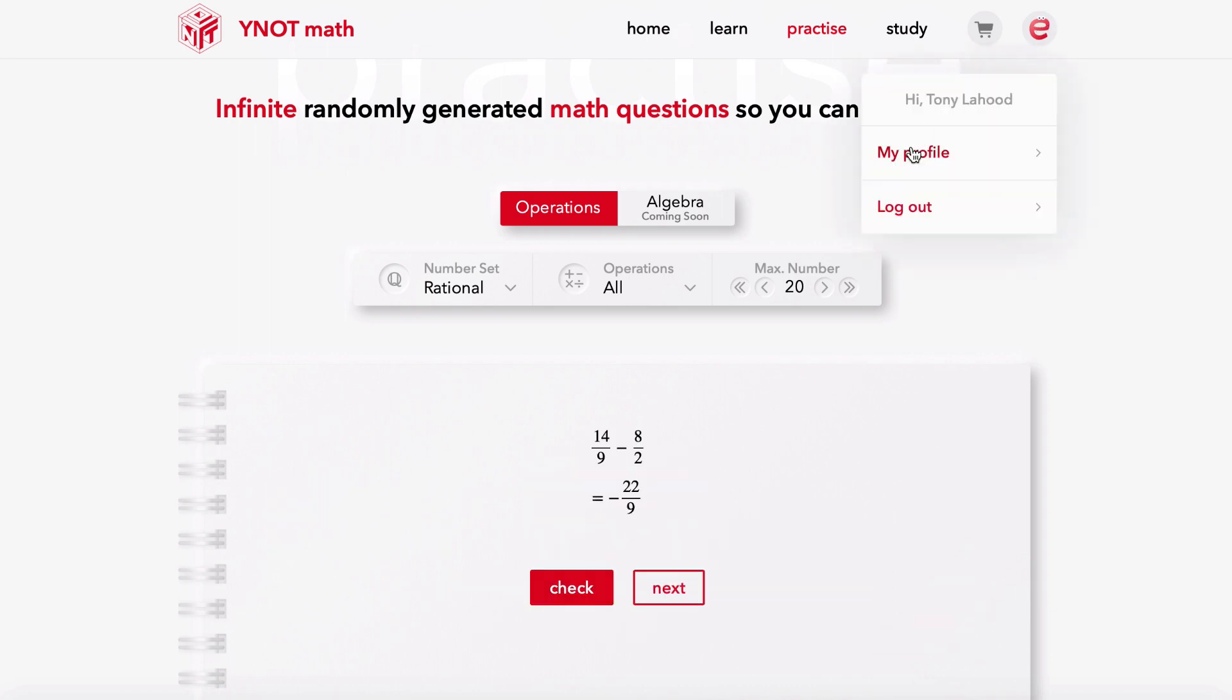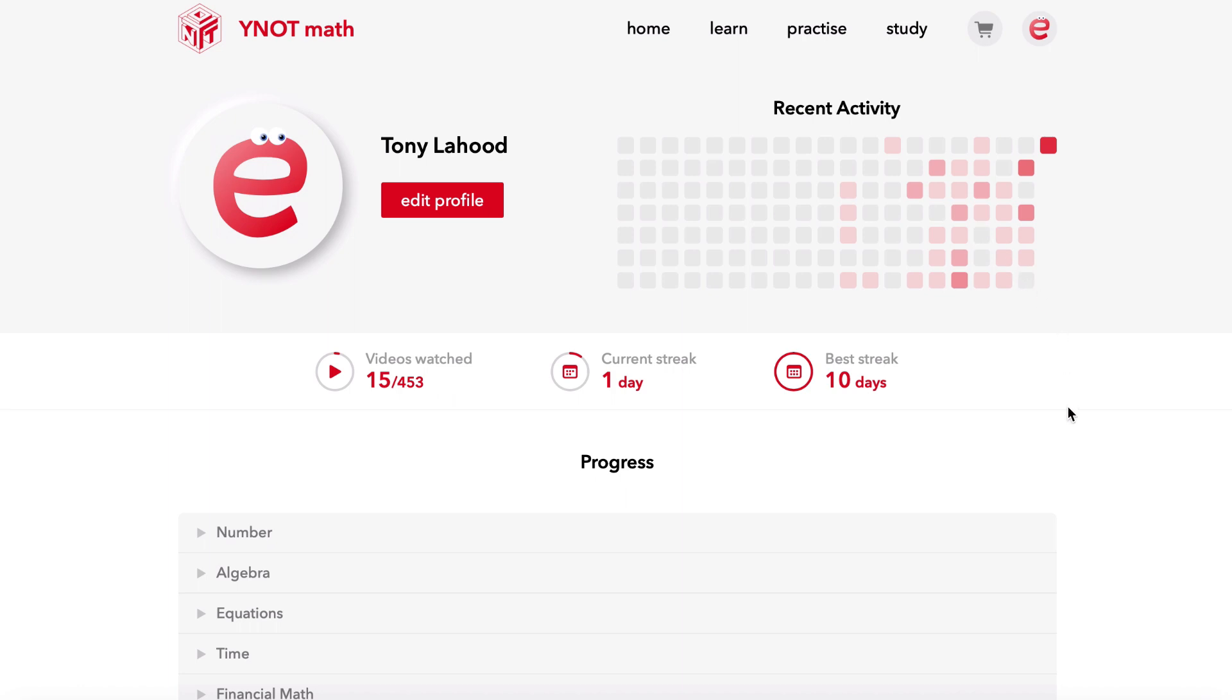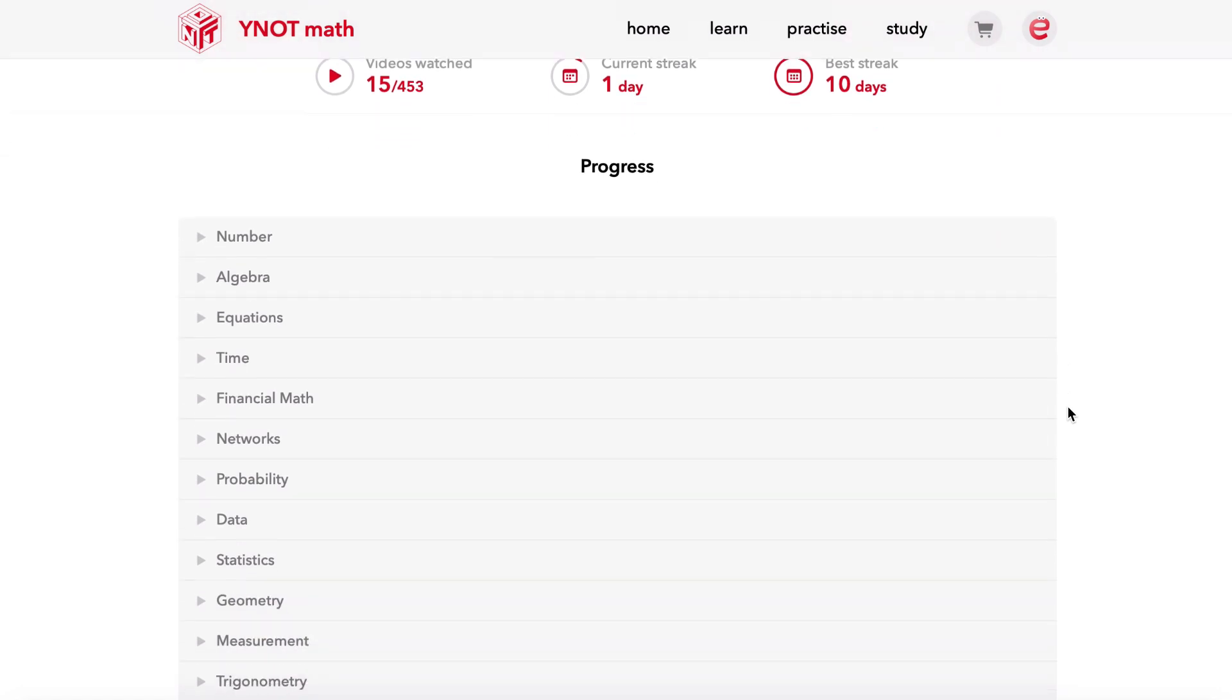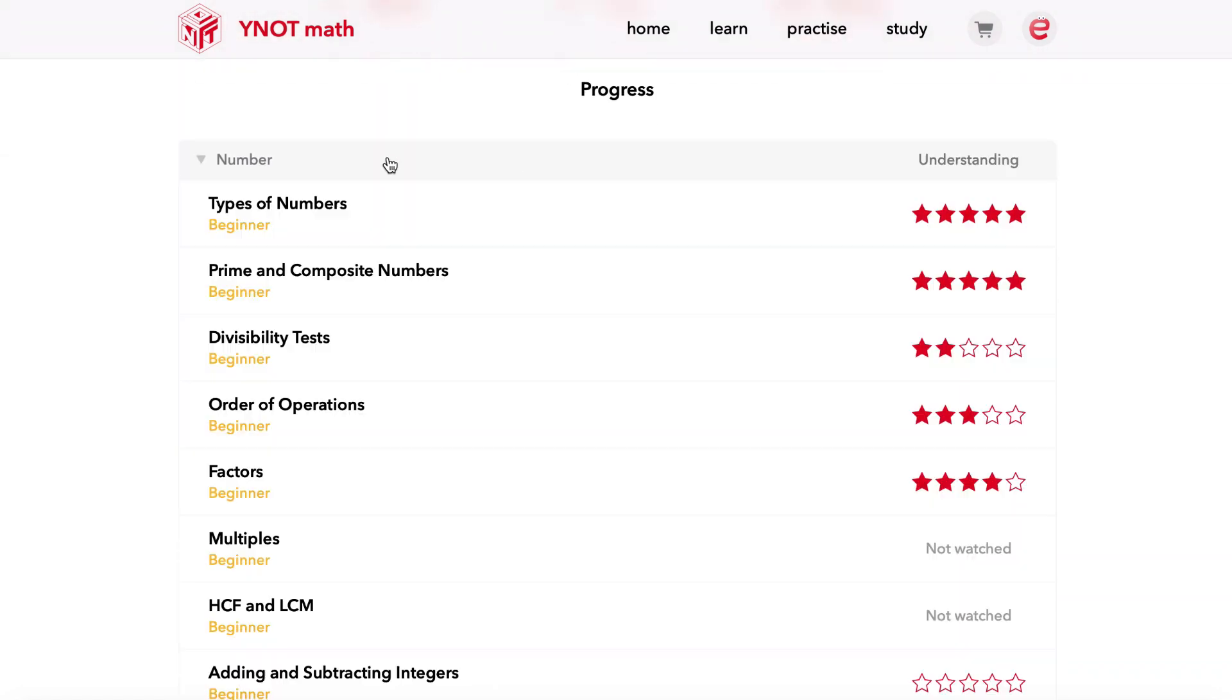Go to your profile page where you'll see your most recent activity, the number of videos you've watched, and your streaks. You'll also see an overview of your progress where you can see your own understandings of every topic so you can target areas that need the most improvement.